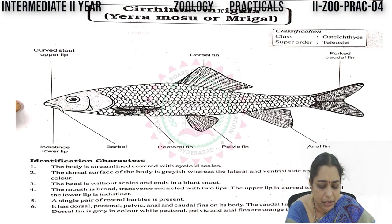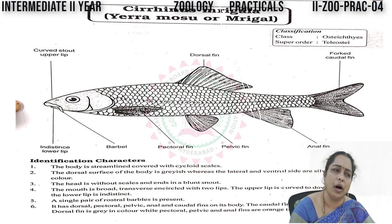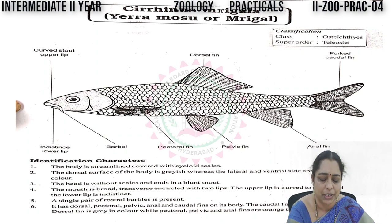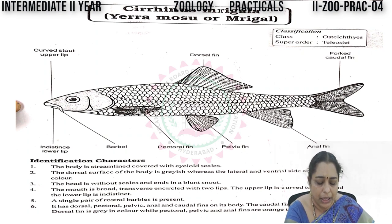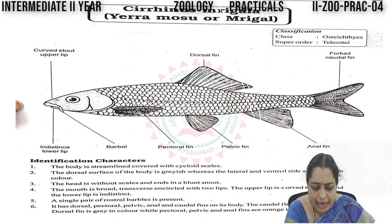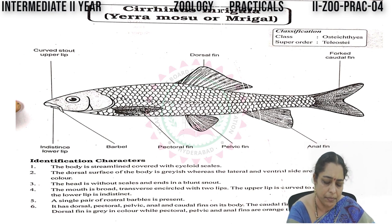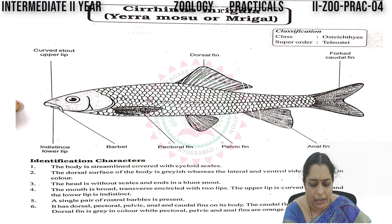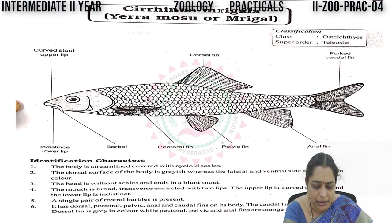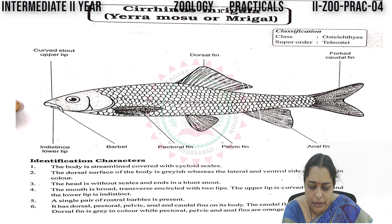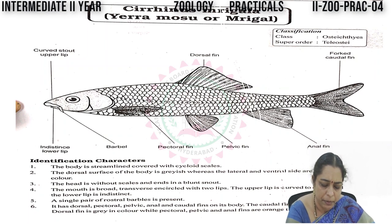If you see the identification characters: the body is streamlined, covered with cycloid scales. As we know, in all bony fishes the body is covered by cycloid scales. The dorsal surface of the body is grayish, whereas the lateral and ventral surface is silvery in color. The head is without scales and ends in a blunt snout. The mouth is broad, transverse, encircled with two lips. The upper lip is curved downward and the lower lip is indistinct.